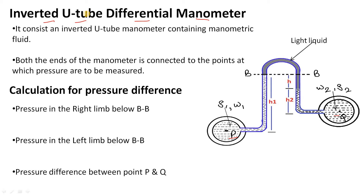Please let me know in the comments box what are the industrial applications where we use inverted U-tube differential manometer — that is your homework. The inverted U-tube differential manometer consists of an inverted U-tube containing a manometric fluid, which is a light liquid. Its specific gravity is less than the specific gravity of the liquid whose pressure difference we have to measure, represented by S1 and S2.